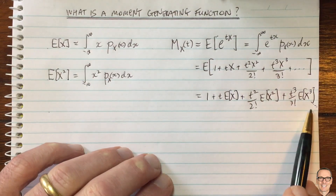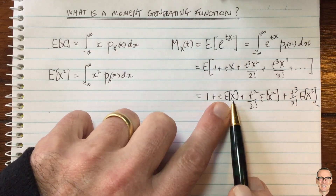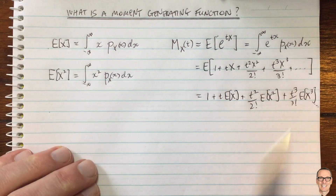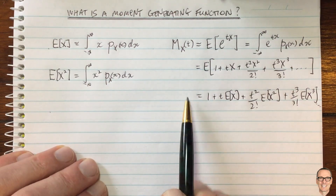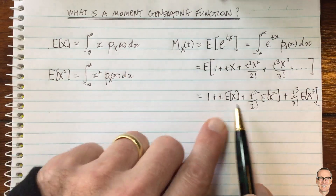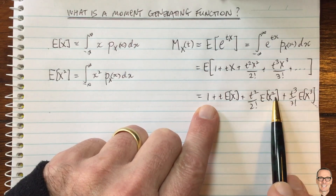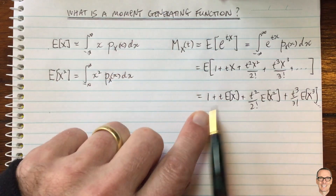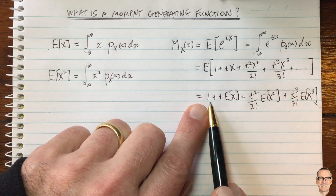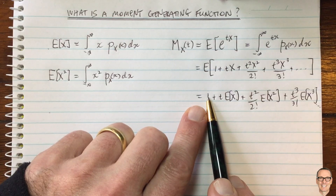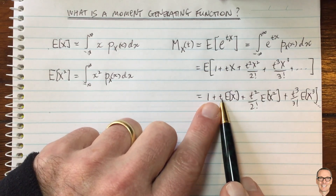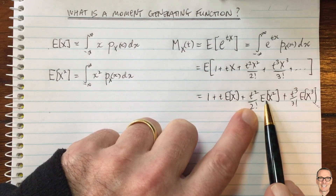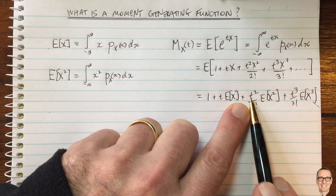This is an infinite series where each term includes one of the moments — this term includes the first moment (the mean), this one the second moment, and so on. We can calculate each of these moments by taking the derivative of this function and then setting t equal to zero. For the first moment, we take the first derivative and set t equal to zero. The constant term disappears, this becomes E[x], and the higher order terms vanish when t equals zero.